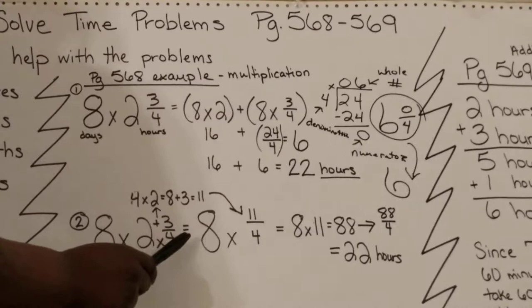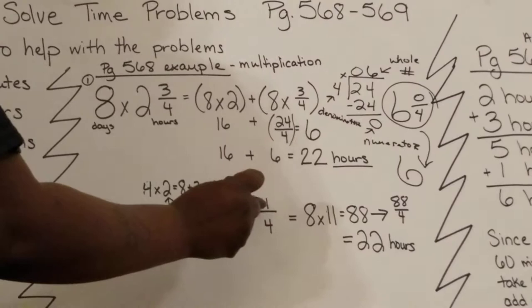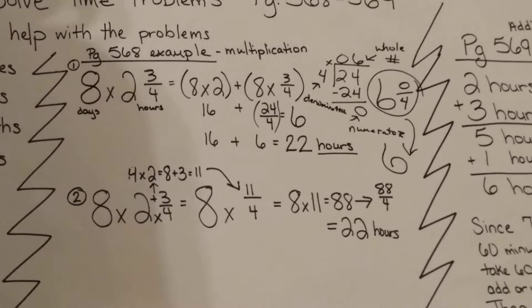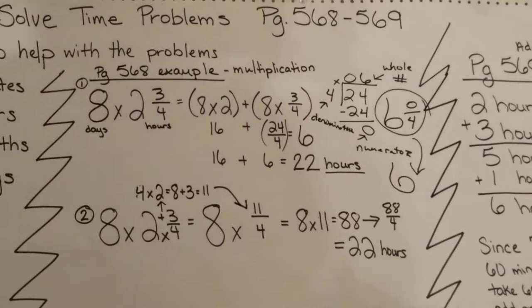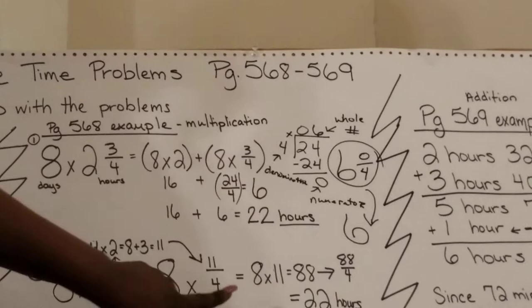You take our whole number, multiply it times our numerator. That's 8 times 11. If you know what 8 times 11 is, it equals 88. I put that over the same denominator. Now I have 88 over 4, or 88 divided by 4. Let's go ahead and change that into a mixed number or whole number.